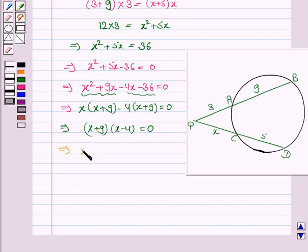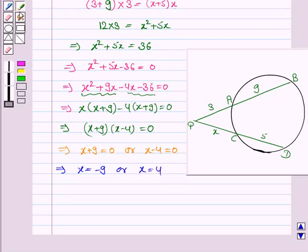This implies x plus 9 is equal to 0 or x minus 4 is equal to 0. So this implies x is equal to minus 9 or x is equal to 4.